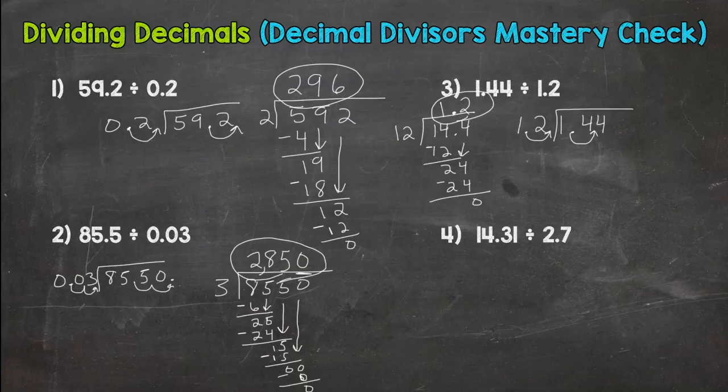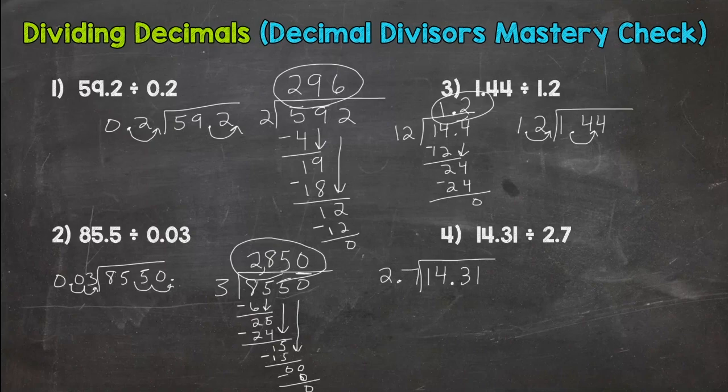Okay and let's wrap it up here with number 4. We have 14. This is a good one here. This is the hardest one out of the 4. If you got this one you really know what you're doing. 2.7 and 14.31. So not a whole divisor here. So we need to make it whole. Multiply it by a power of 10 or move the decimal. Same thing. So we get 27. Move it once on the inside. 143.1.